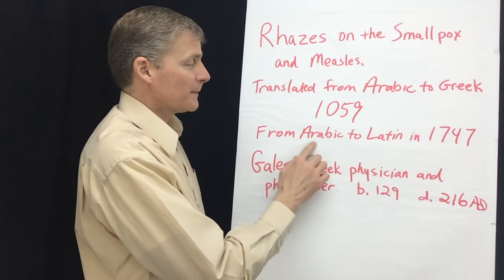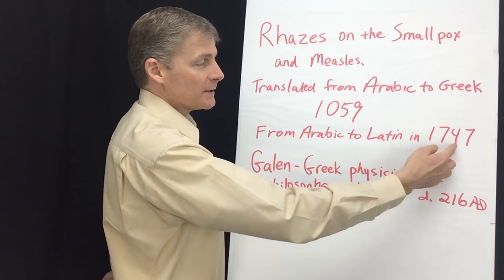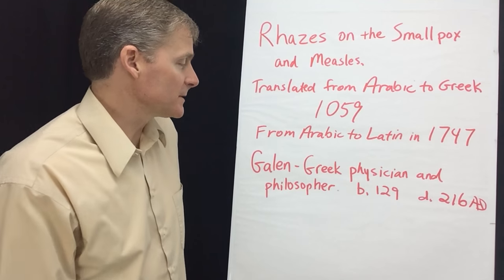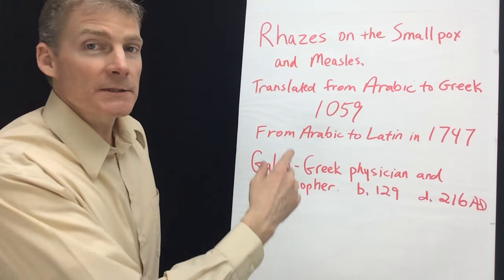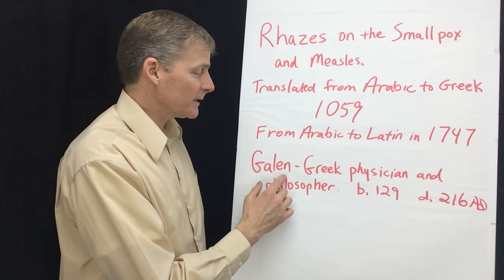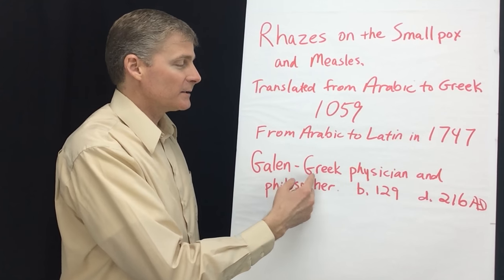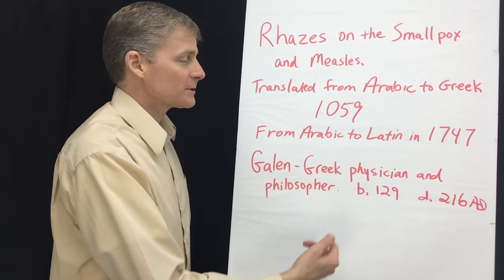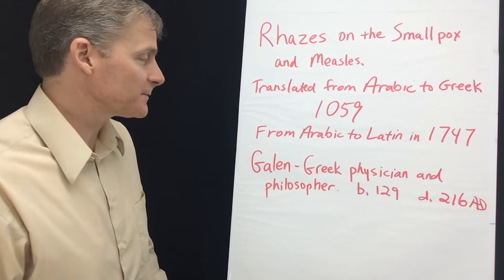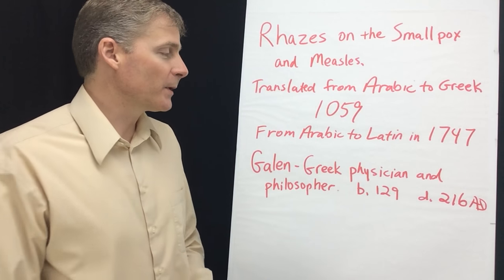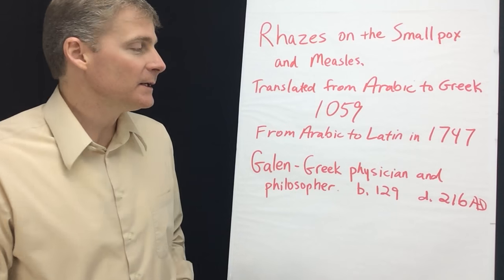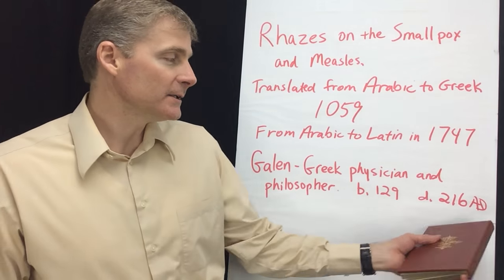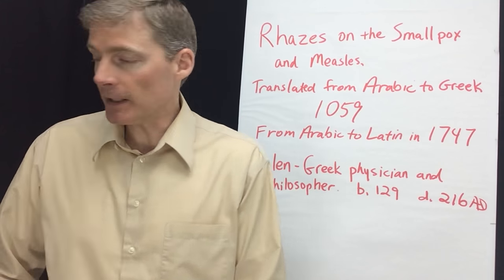It was translated from Arabic to Latin in the year 1747. Rhazes talks about Galen. Galen is a Greek physician and philosopher. He was born in the year 129 A.D. and died in the year 216 A.D.